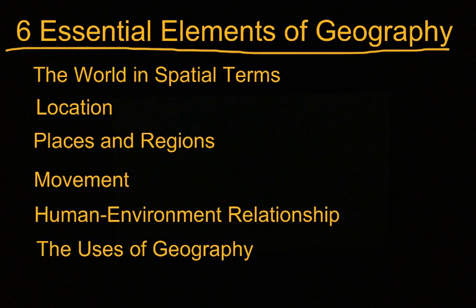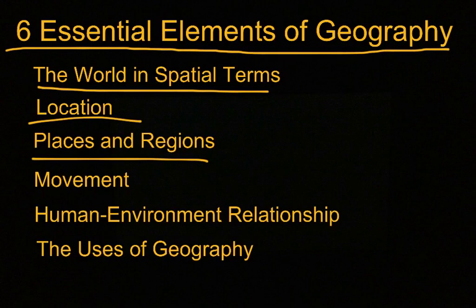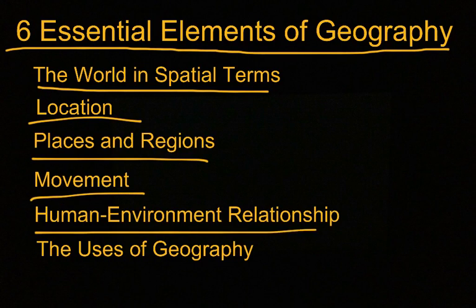Now we are going to switch our attention to the six essential elements of geography. The essential elements of geography are: the world in spatial terms, location, places and regions, movement, human environment relationships, and the use of geography.